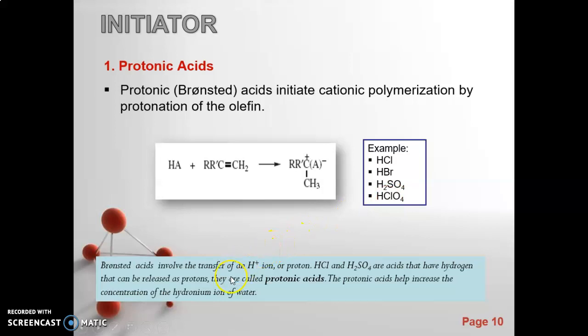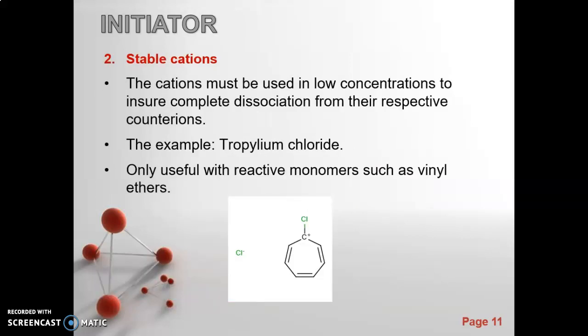Bronsted acids involve the transfer of an H+ ion or proton. HCl and H2SO4 are acids that have hydrogen that can be released as protons, so they are called protonic acids. Protonic acids help increase the concentration of hydronium ions in water. For stable cationic acids, they are used for reactive monomers such as vinyl ethers. This is the structure of tropylium chloride. The cationic acids must be used in low concentration to ensure complete dissociation from their respective counter ions.